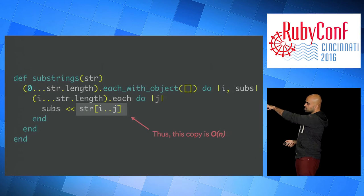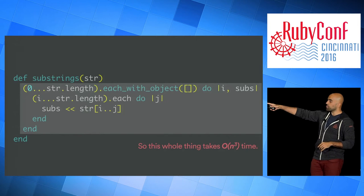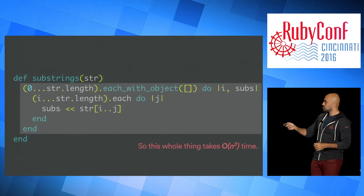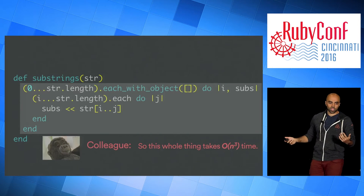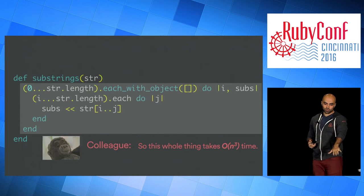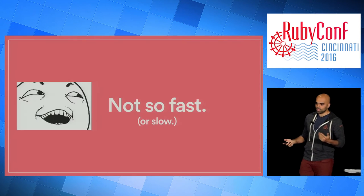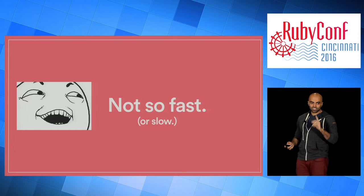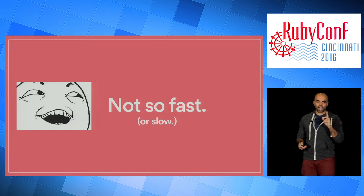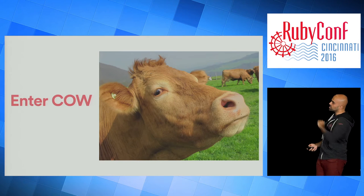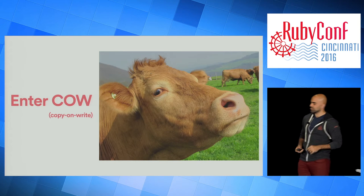Therefore, the copy that happens inside this loop is O(n). And if that copy is O(n), then the whole thing is O(n³) — which is what my colleague said. So basically, I was wrong. But not so fast — I knew something he didn't know.